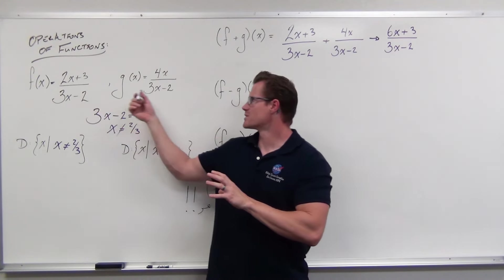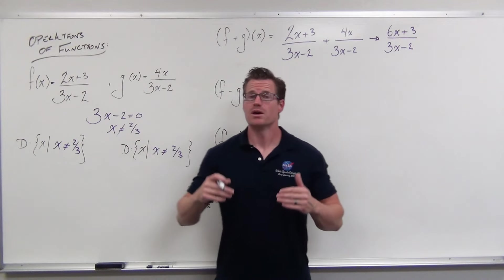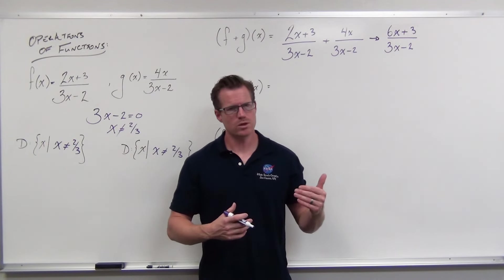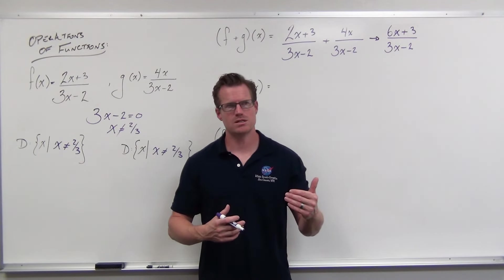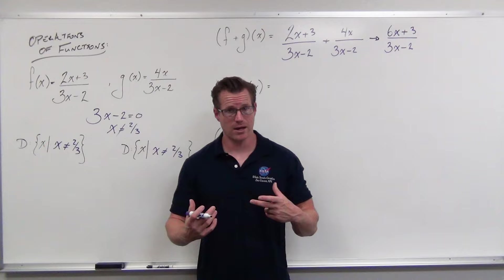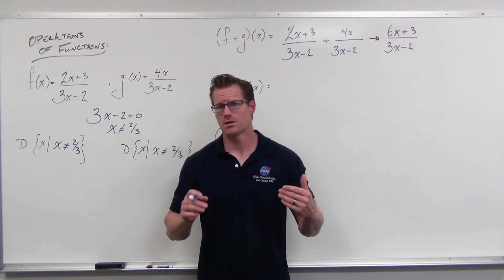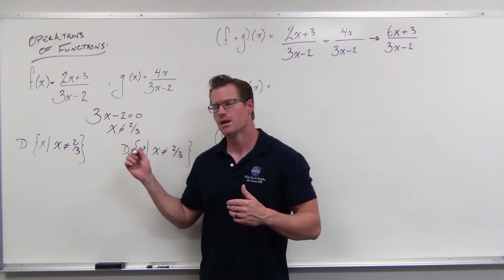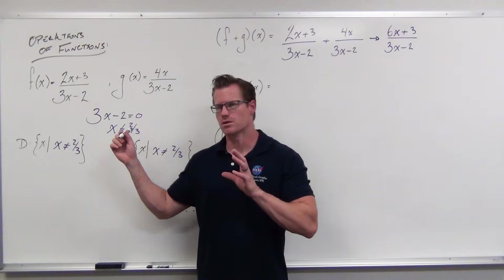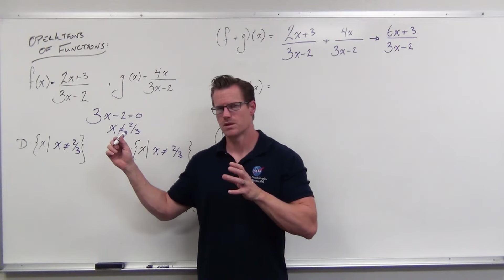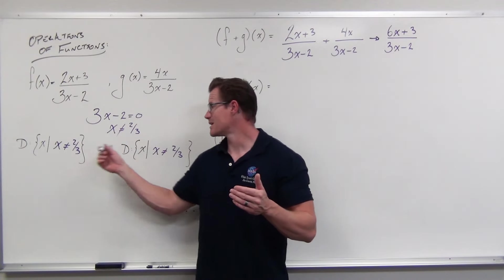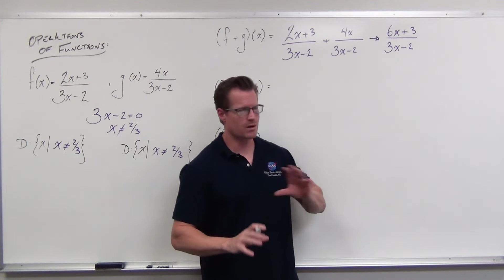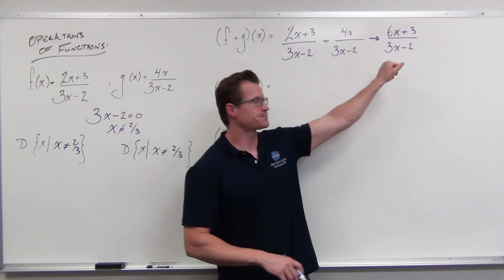Denominators should always be factored. Even if these denominators had been different, you would have found a common denominator, which means you'd have the same factors, and those factors equaling zero would cause domain issues. So even if your denominators are different, you'd find a common denominator and these domain restrictions would appear again in your result.